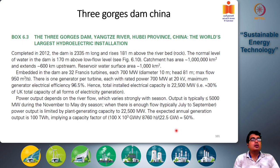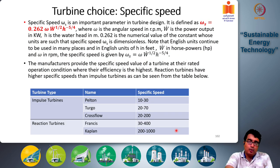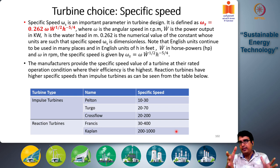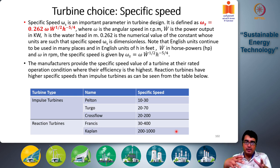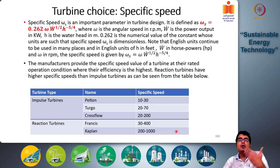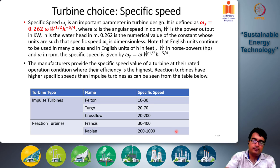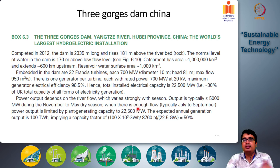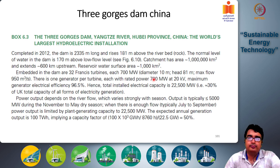That is an example of a very large hydropower plant in operation in the world today. In the next class, we will look at another way of designing turbines. Rather than the detailed velocity diagrams of Francis turbines, which require advanced turbomachinery knowledge, we will instead use something called the specific speed to understand how turbines can be sized and which turbine to use in different conditions, along with some worked-out examples.